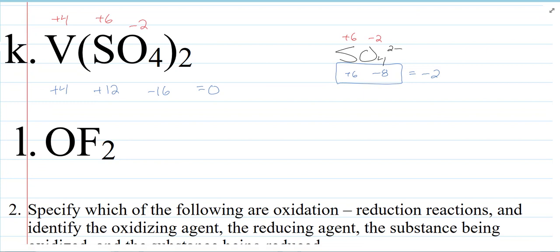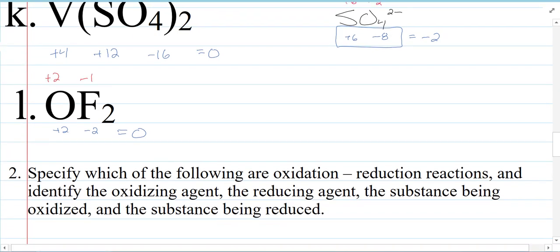All right, OF2, add up to zero. Oxygen is not who we start with. We start with fluorine is negative one. There's two of them. So oxygen is going to be plus two. Probably not a very stable compound, because oxygen wants to be minus two.